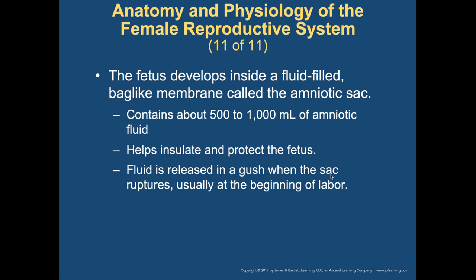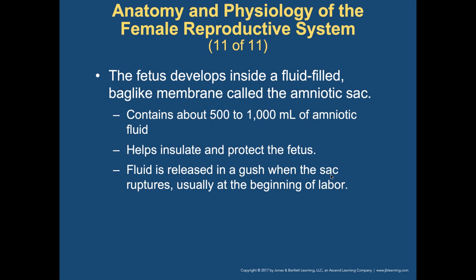The fetus develops inside a fluid-filled membrane called the amniotic sac, holding roughly 500 to 1,000 milliliters of amniotic fluid. This fluid provides cushioning and insulation to the baby. The amniotic fluid is released in a gush when the sac ruptures — sometimes it must be manually opened, sometimes it ruptures prior. This is also a beginning sign of labor.